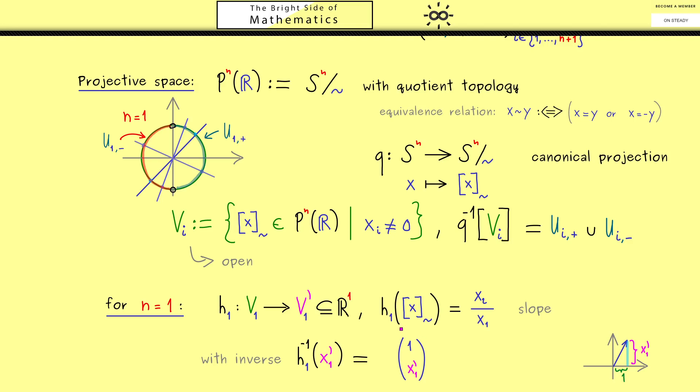For all other cases we need to scale this vector. In other words, we need to push the length of this vector, the Euclidean length, to 1. Hence we just divide by the Euclidean length. So the square root of 1 squared plus x_1' squared. In fact this brings us to a point on the circle. However, we don't want a point on the circle, we want a point in the projective space. Therefore we need to look at the equivalence class of this point. And with this you see we have defined the inverse of the map h_1. And indeed it's not hard to see that this is a continuous map. Hence we have a homeomorphism between V_1 and R^1.